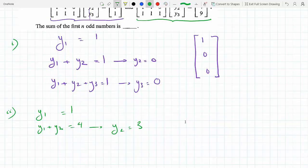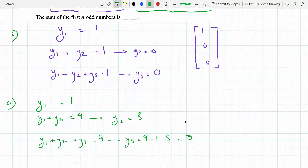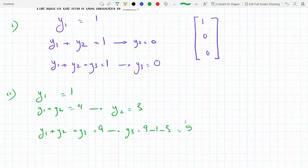The third one is y1 plus y2 plus y3 equals 9, so that means y3 equals 9 minus y1 minus y2, which is 5. 9 minus 4 is 5, so I would get 1, 3, 5 for y1, y2, and y3.